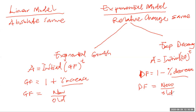For the decay factor, it is one minus the percentage decrease when you are given the percentage decrease. When you're not given the percentage decrease but you have consecutive numbers, you do new over old. These formulas are on pages 235 and 236 of your text. I wanted you to understand and put these formulas side by side and look at the relationship between each of them.